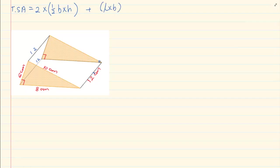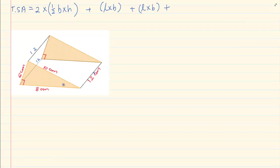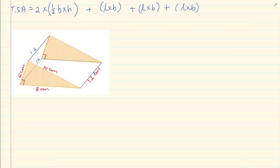Then we have the rectangle on top which is equal to again length times breadth. And we have the last rectangle at the bottom which is 8 times 12. Now can you see how all the rectangles are different?